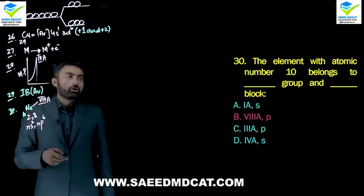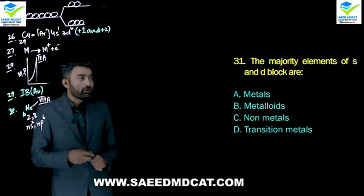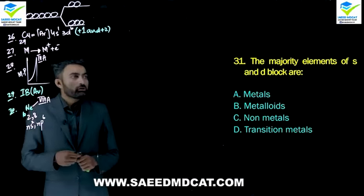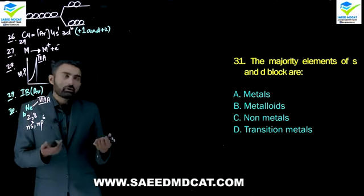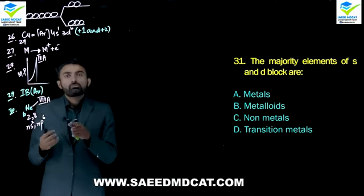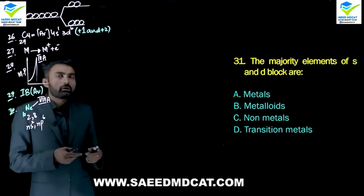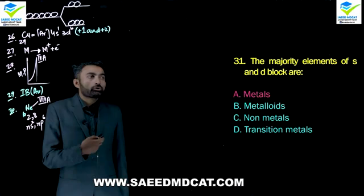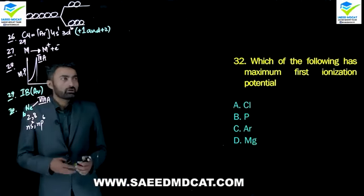Question 31: The majority of elements of s and p block — or s and d block — are metals? S block has alkali metals and alkaline earth metals, both metals. D block has transition elements, again metals. So alpha option: the majority are metals.